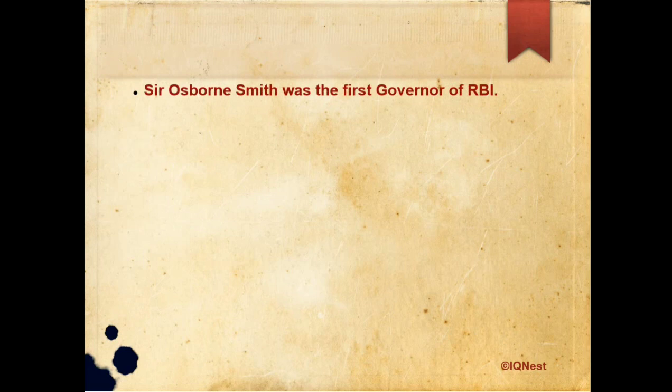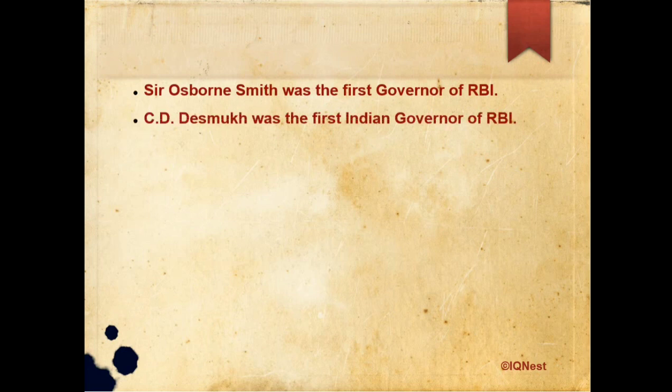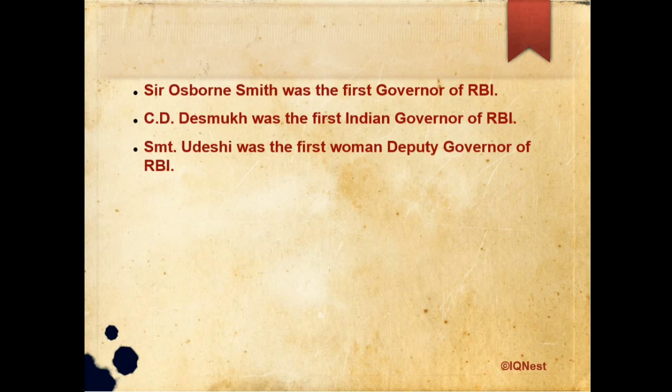Sir Osborn Smith was the first Governor of RBI, and C.D. Deshmukh was the first Indian Governor of RBI. Please remember these two names. Additionally, Srimati Usha Thorat was the first woman Deputy Governor of RBI.